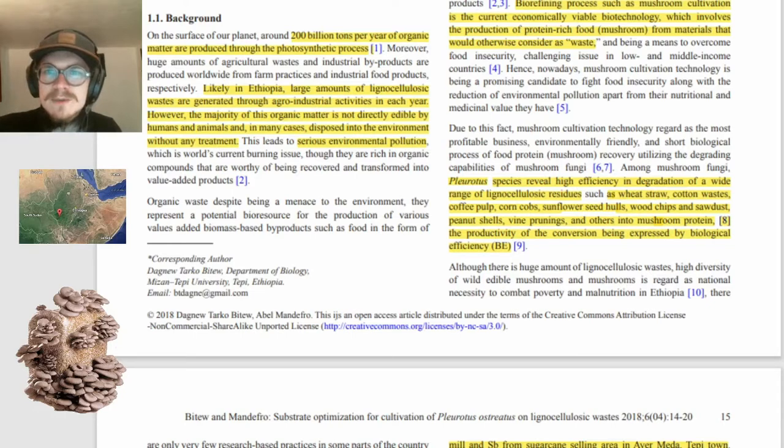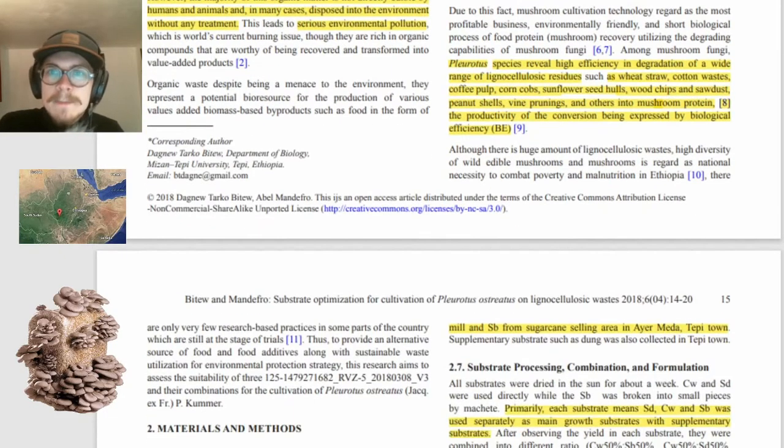A biorefining process such as mushroom cultivation is the current economically viable biotechnology, which involves the production of protein rich food. The Pleurotus species reveal high efficiency and degradation of a wide range of lignocellulosic residues, such as wheat straw, cotton wastes, coffee pulp, corn cobs, sunflower seed hulls, wood chips, sawdust, peanut shells, vine prunings, and others into mushroom protein.